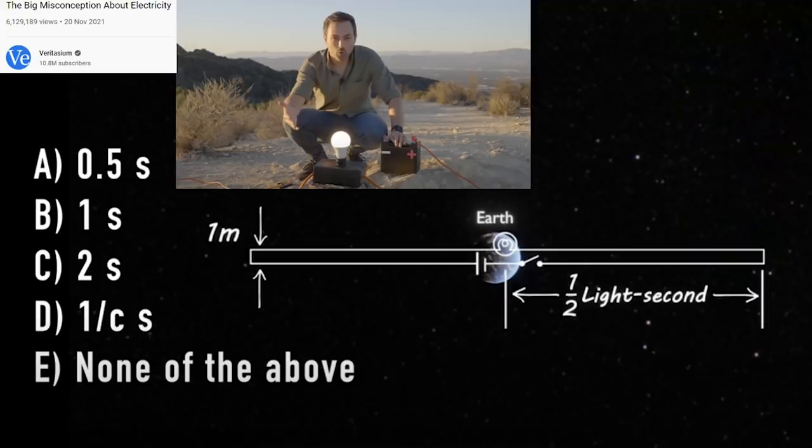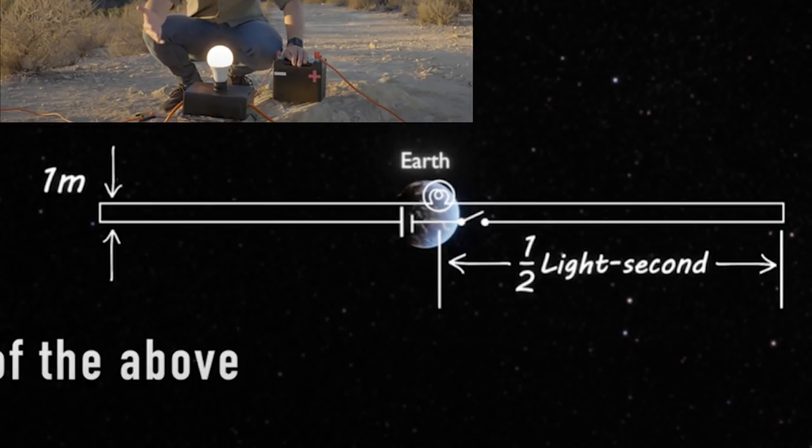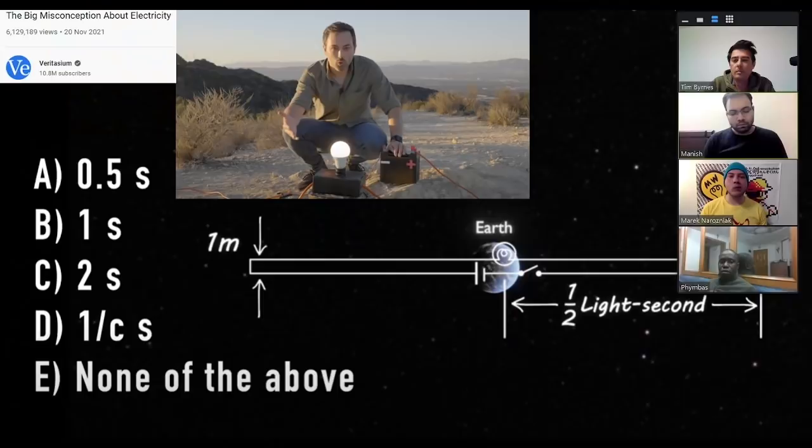The thought experiment goes something like this: there's a battery and a simple circuit with a light bulb on the other side. There's a switch, and the wires extend a long distance — about half a light second — so traveling the length of the wire and back would take one second. The question he asks is: if you turn on the switch at time t equals zero, when does the light bulb come on?